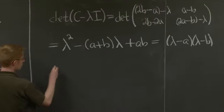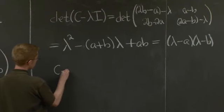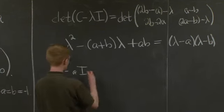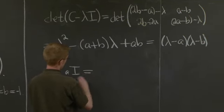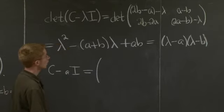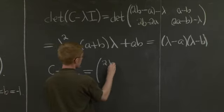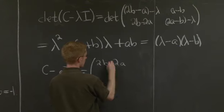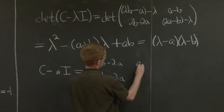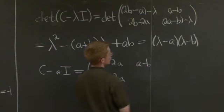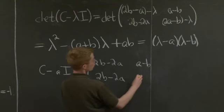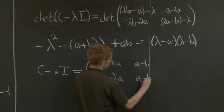Well, what we need to do is we need to look at C minus A times the identity, and we need to find the null space of this matrix. So what do we get here? We get 2B minus 2A, and then our next entry here, we get 2A minus B minus A. So this is A minus B.